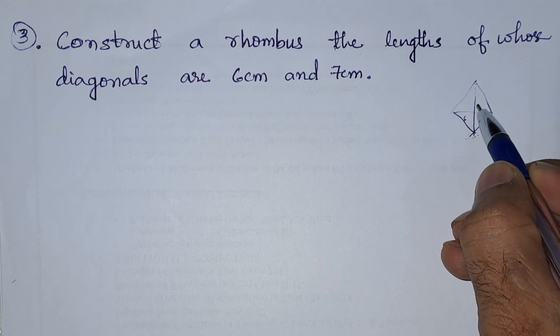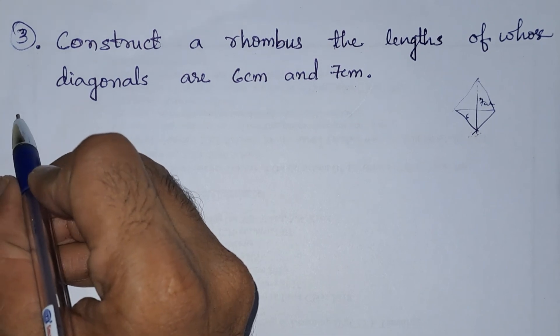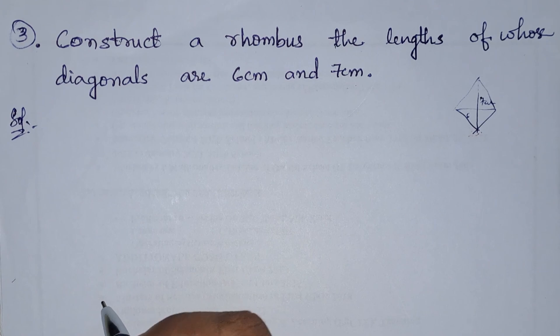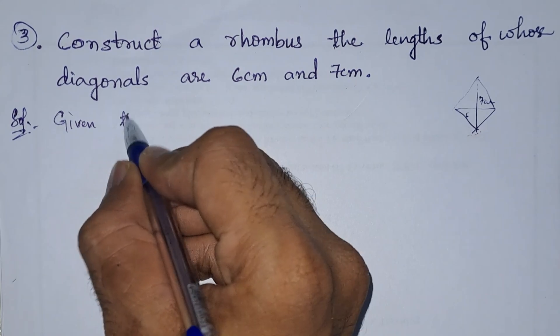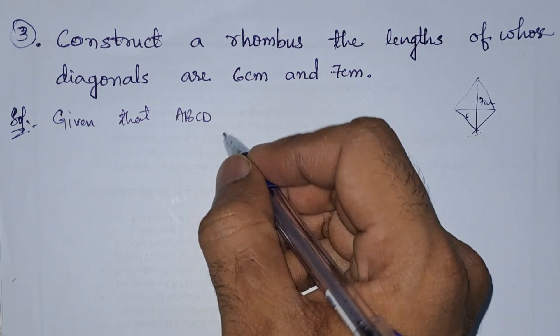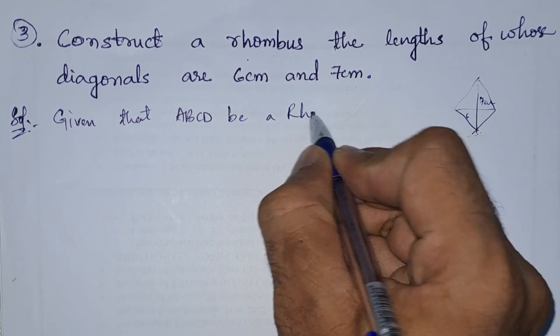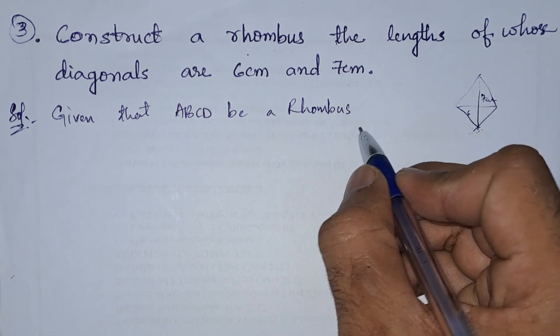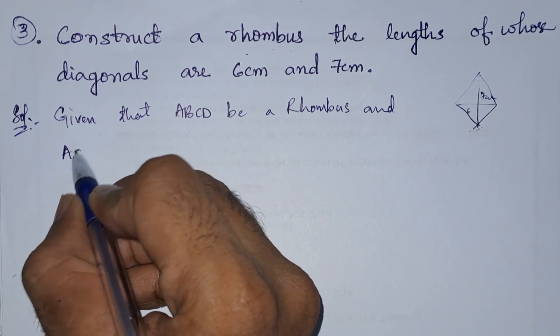They have given the measurement of this: 6 centimeters and 7 centimeters. Now we will start the solution. In the solution we will write what they have given. Given that ABCD be a rhombus.